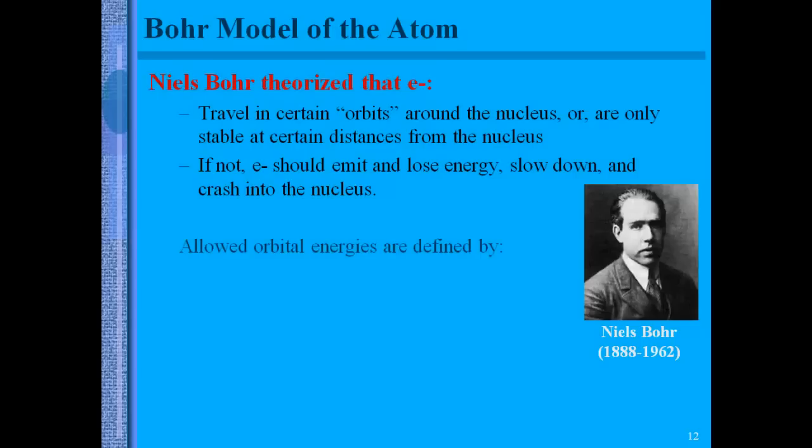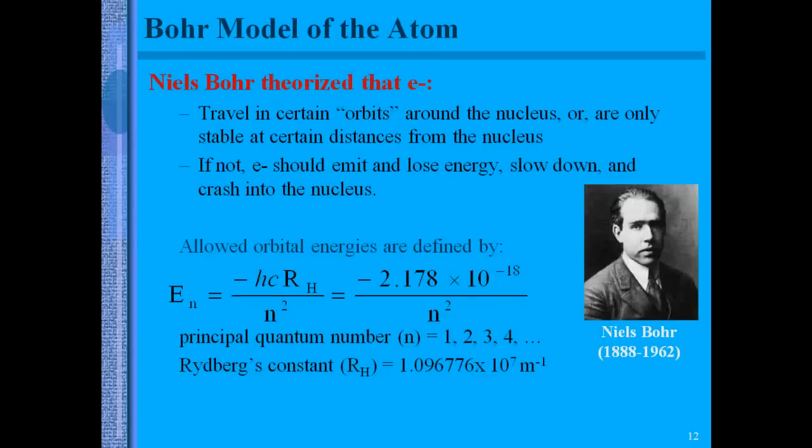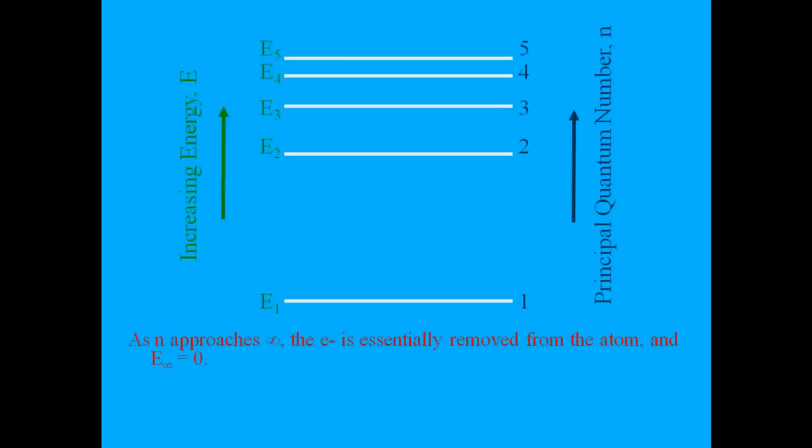We can figure out the orbital energies with this equation. We have the principle of quantum numbers, which is the main energy levels, one, two, three, four, and Rydberg's constant, which is given to you there. Now, the 2.178 times 10 to the negative 18th, that's just Planck's constant times the speed of light times Rydberg's constant. Since they're all constants, you can multiply them together and get this 2.178 times 10 to the negative 18th.